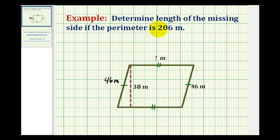But now if we take the perimeter of 206 meters and subtract out the length of these two sides, it'll leave the length for the remaining two sides. And since they're equal in length, we can divide that by two to determine the length of the missing side.